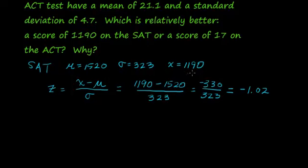So a score of 1190 is just a little more than one standard deviation below the mean. The negative tells us below, and then 1.02—so just a little bit more than one standard deviation below the mean.